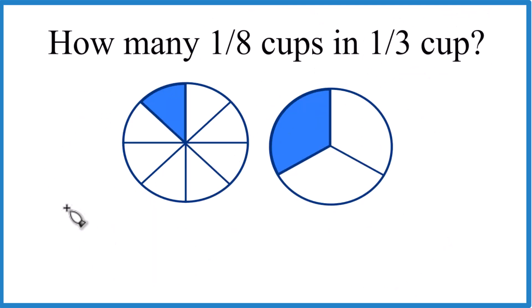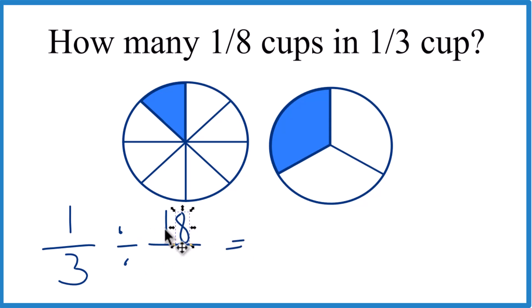Because we're taking our 1/3 cup, and we want to know how many times 1/8 of a cup goes into that. What we can do, instead of 1/8, we can take the reciprocal here. We can put the one on the bottom, eight on the top, and now, instead of division, we just use multiplication.